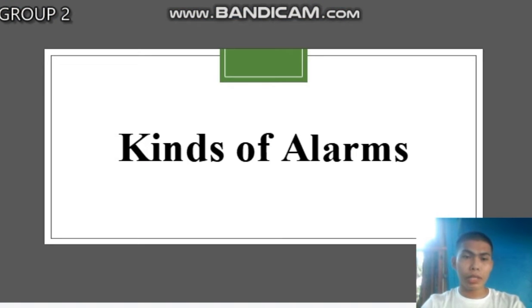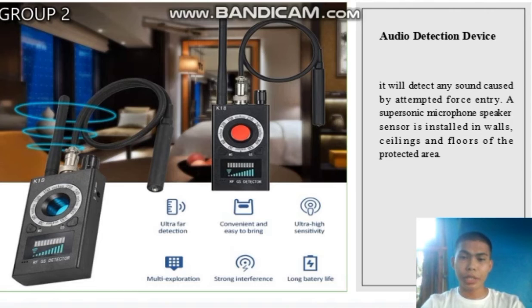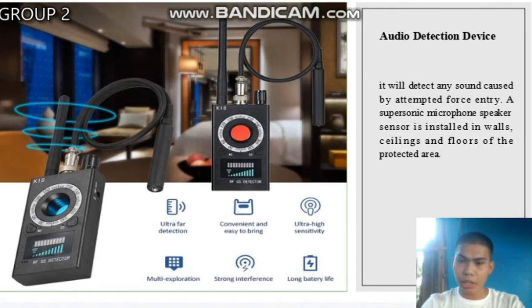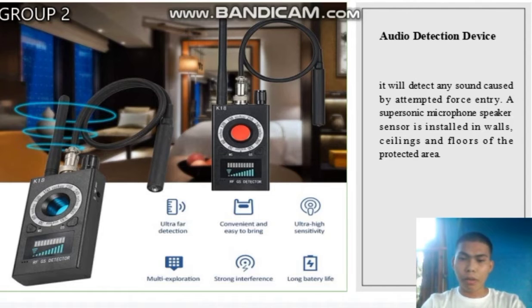The next topic is kinds of alarms. The first is the audio detection device. It will detect any sounds caused by attempted forced entry. A supersonic microphone or speaker sensor is installed in the walls, ceiling, and floors of the protected area.